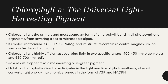Chlorophyll A is highly efficient at absorbing light in two specific ranges: 400 to 450 nm, which is blue to violet, and 650 to 700 nm, which is red. As a result, it appears as a mesmerizing blue-green pigment.